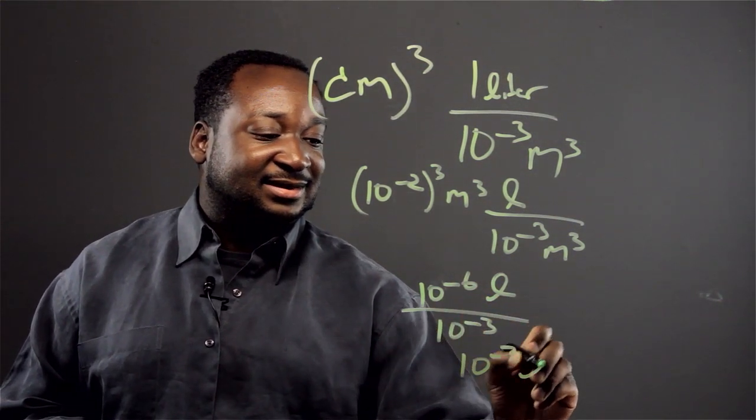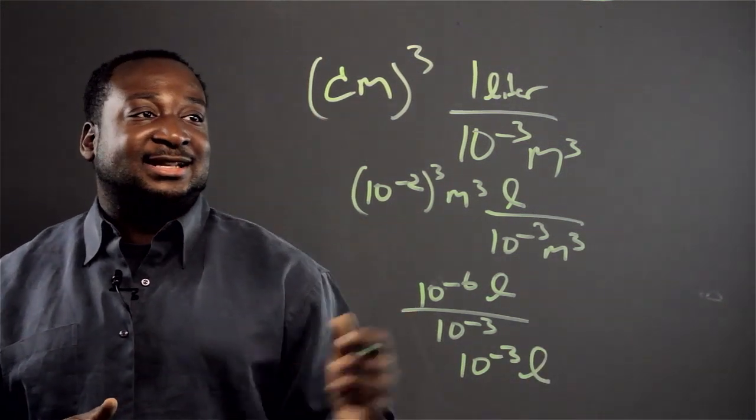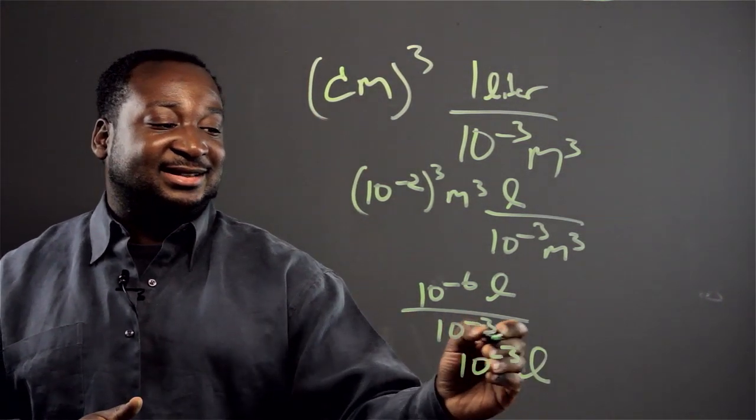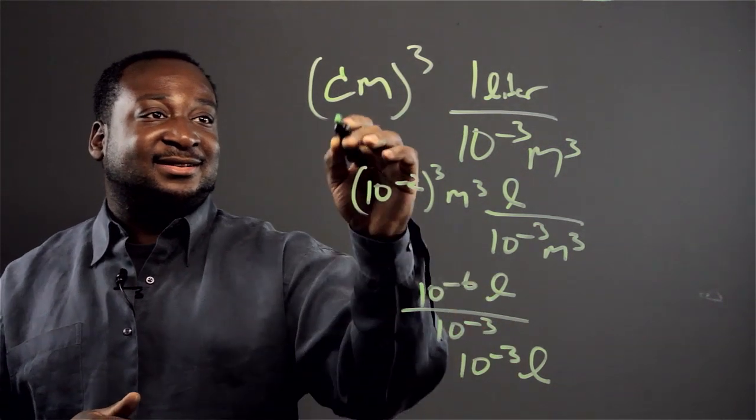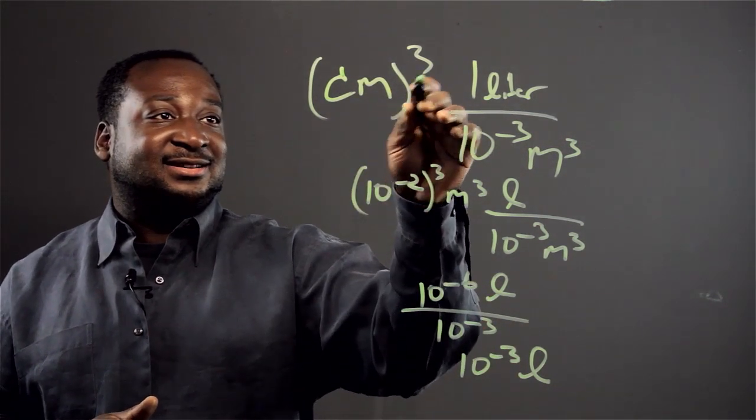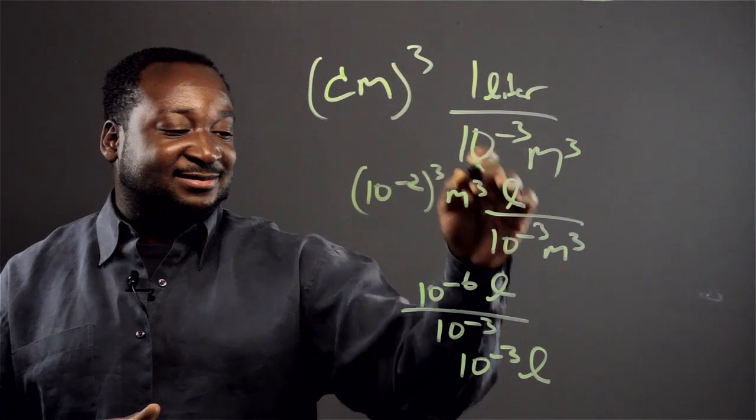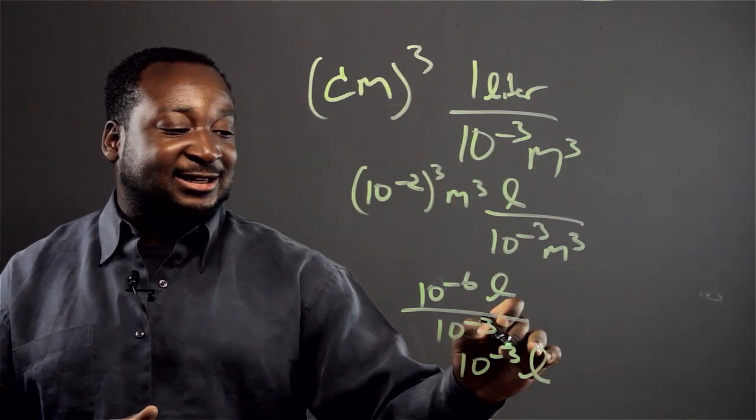Liters. And that's how you convert. So one cubic centimeter is equivalent to 10 to the negative 3 liters.